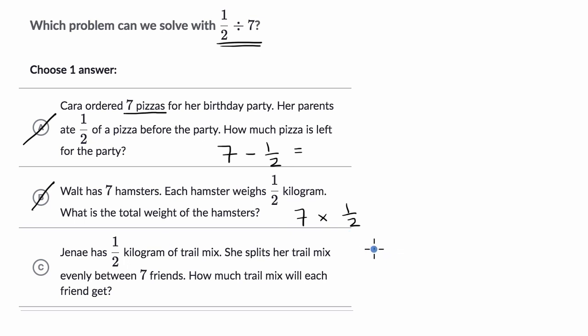All right, she has a total amount, one half of a kilogram, and she's going to divide that total amount. She splits her trail mix evenly between seven friends. So she's going to take this one half and split it evenly amongst seven friends to get a certain amount per friend. How much trail mix will each friend get? And that's exactly what that expression up there is. So I am liking this choice.